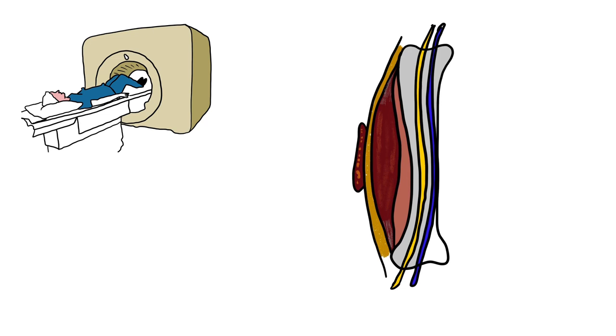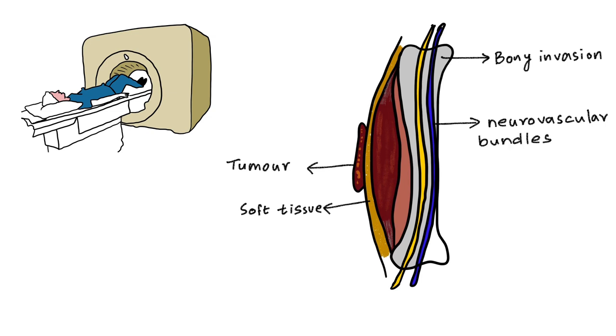MRI is the ideal imaging modality for local infiltration. Using MRI, we can make out the involvement of soft tissue by the tumor as MRI has excellent soft tissue resolution. Bony invasion and encasement of neurovascular bundle can also be made out. This information will help us plan the surgery of the patient.